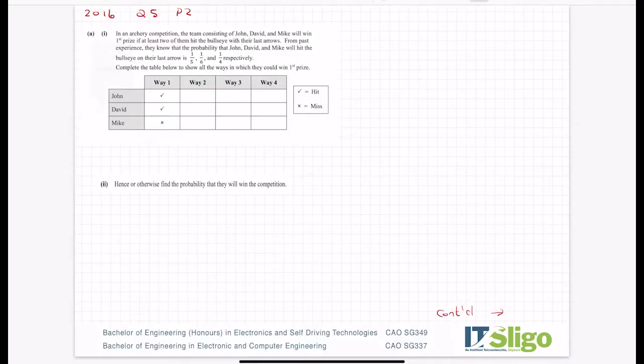Leaving Cert Higher Level Probability Question from the 2016 paper, question 5 on paper 2. In an archery competition, the team consisting of John, David, and Mike will win first prize if at least two of them hit the bullseye with their last arrows. From past experience they know that the probability that John, David, and Mike will hit the bullseye on their last arrow is one-fifth, one-sixth, and one-quarter respectively. Complete the table below to show all the ways in which they could win first prize.